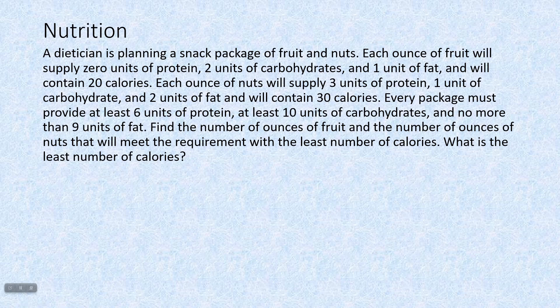A dietitian is planning a snack package of fruit and nuts. Each ounce of fruit will supply zero units of protein, two units of carbohydrates, and one unit of fat, and will contain 20 calories. Each ounce of nuts will supply three units of protein, one unit of carbohydrates, and two units of fat, and will have 30 calories. Every package must provide at least six units of protein, at least 10 units of carbohydrates, and no more than nine units of fat. Find the number of ounces of fruit and the number of ounces of nuts that will meet the requirement with the least number of calories. What is the least number of calories?